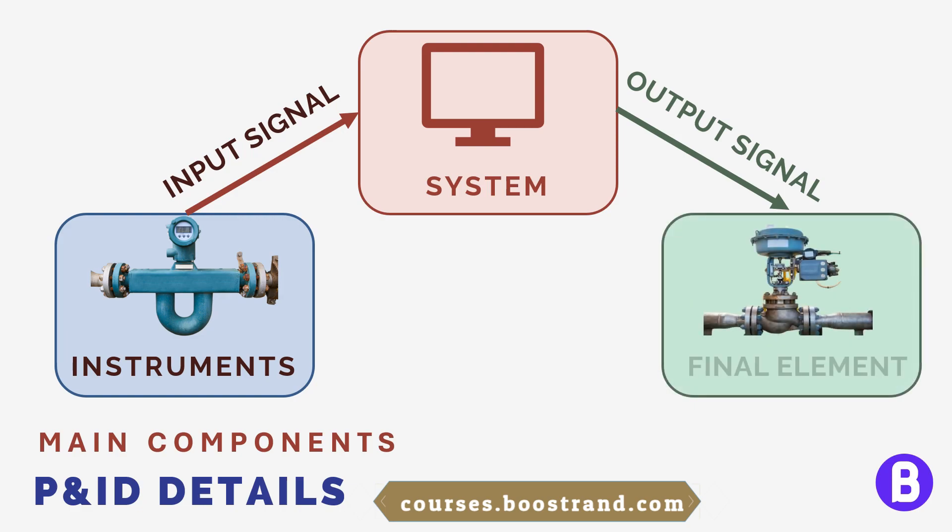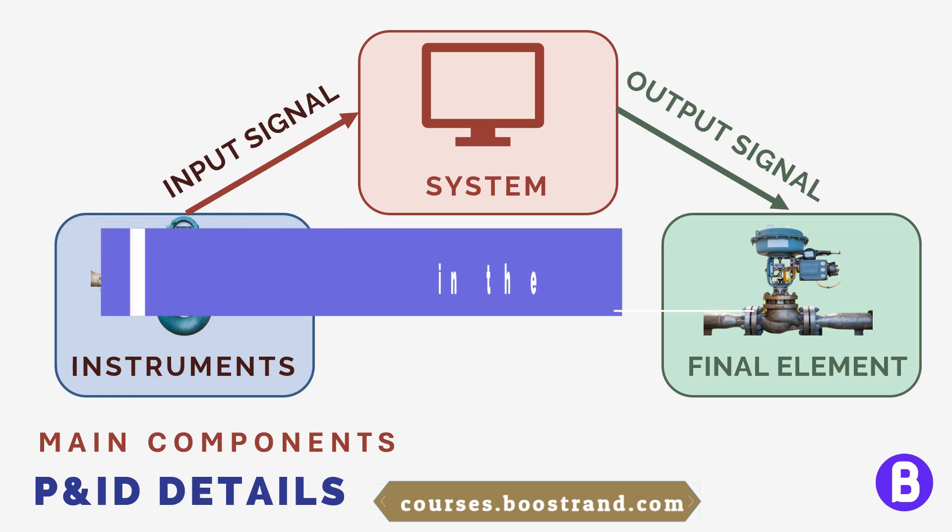The third component is the final control or shutdown element. This can be a control valve, a shutdown valve, or a motor. Based on the output signal sent from the system, the final control element takes the necessary action to adjust the process parameter — so the valve may open or close based on the signal it receives. In the following videos we shall discuss each of these components in more detail.